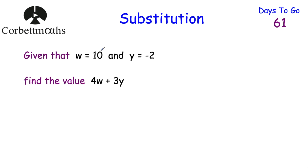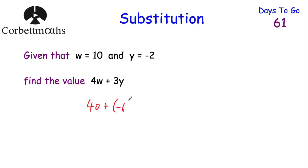This time we've been given that w equals 10 and y equals negative 2. Find the value of 4w plus 3y. So we've got 4w, which means 4 times w, and w is 10, so 4 times 10 equals 40. Then we've got plus 3y. y is equal to negative 2 and we're multiplying by 3, so 3 times negative 2 equals negative 6.